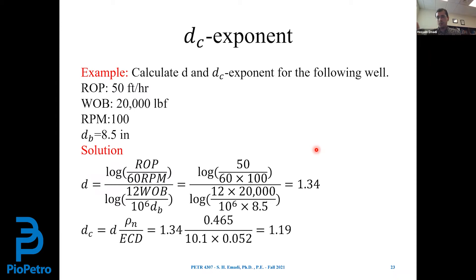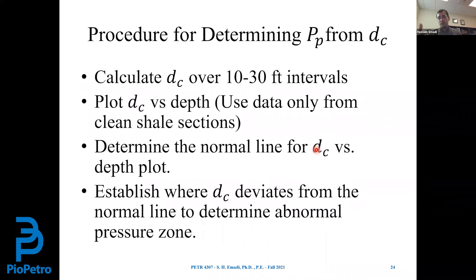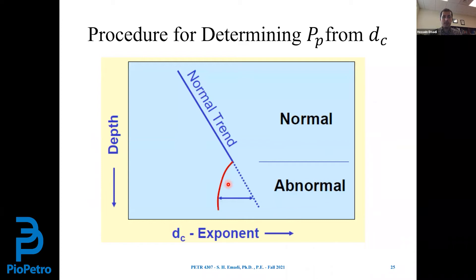When the rate of penetration increases, the d-exponent decreases — this is a property of the log function. If we plot the corrected d-exponent over 10-to-30-foot intervals of a formation, the straight line tells us about the normal pressure trend, and any deviation to the left tells us about abnormal pressure. So plotting TVD versus DC exponent, any leftward deviation indicates abnormal pressure.